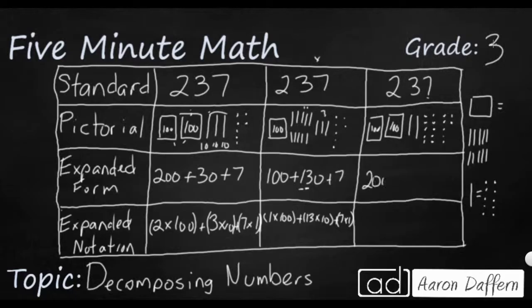I've got two hundreds plus 20 plus now I have 17 ones. And if I were to do that with expanded notation, it would be two times 100 plus my three tens plus now I have 17 ones.